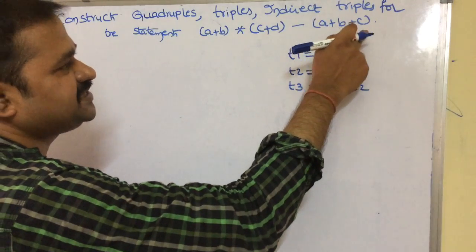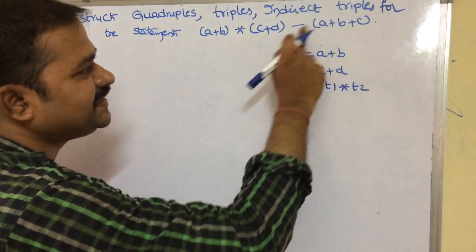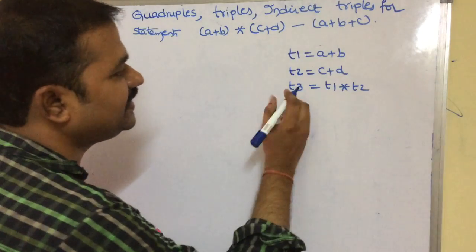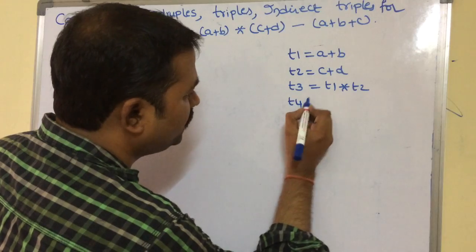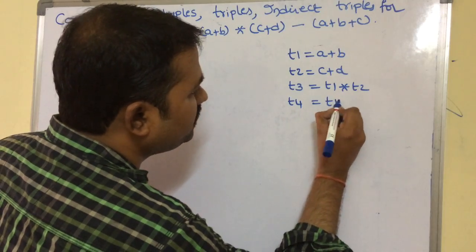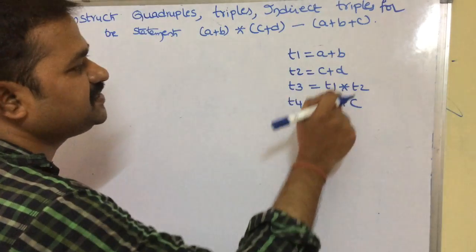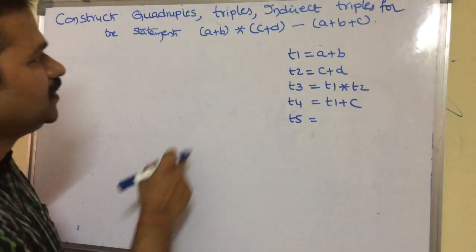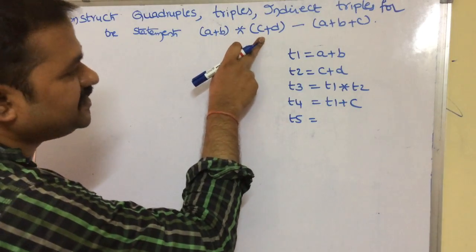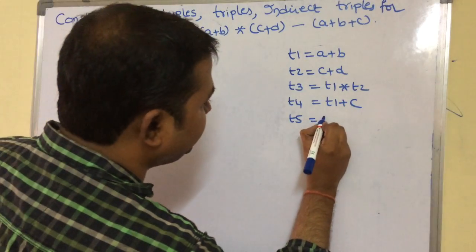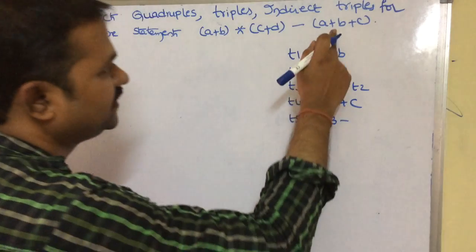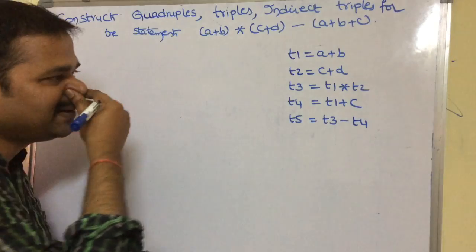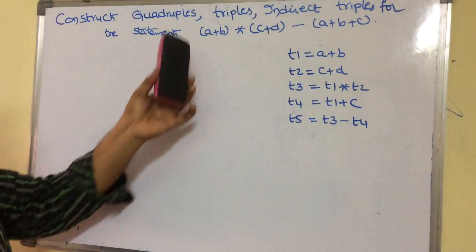Next, a plus b plus c: this a plus b result is already available in t1. So if we add t1 to c, then we will get the next temporary variable, t4 is equal to t1 plus c. Then t5 is equal to t3 minus t4, where t3 is the result of t1 star t2, and t4 is the a plus b plus c result. This is the three address code for this instruction.